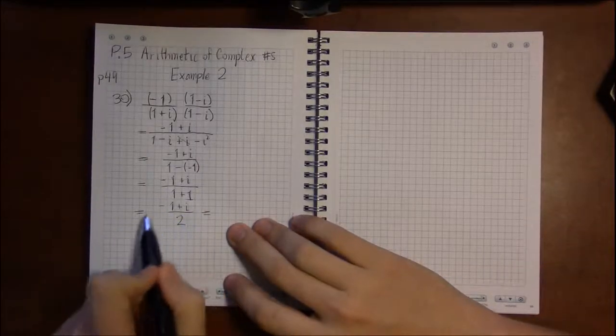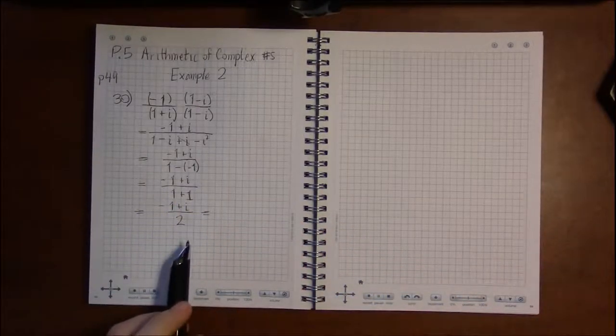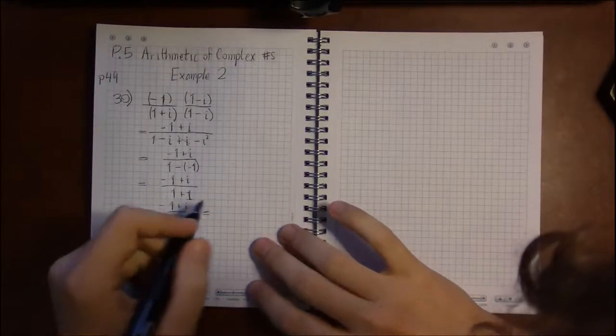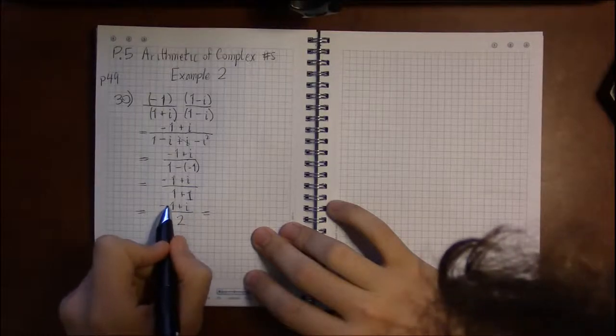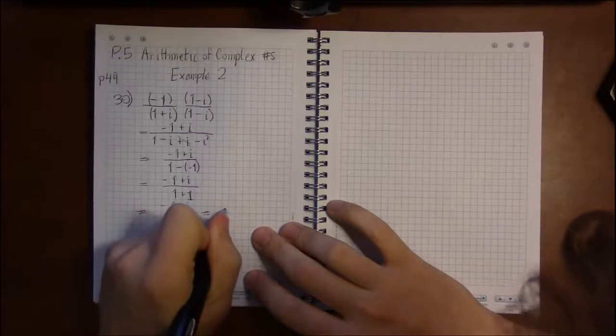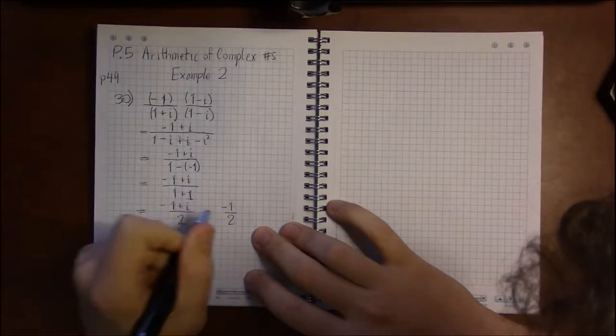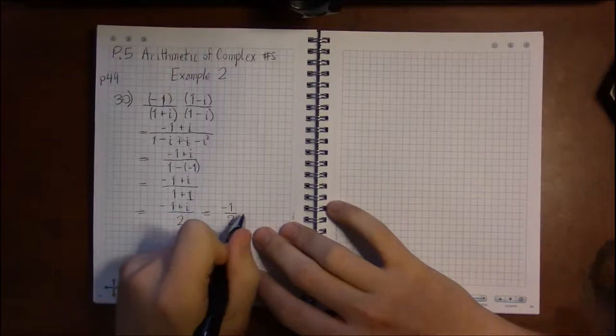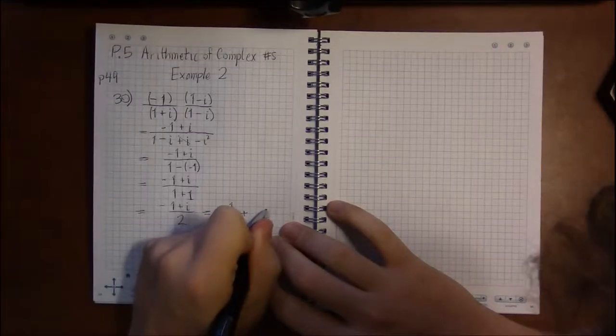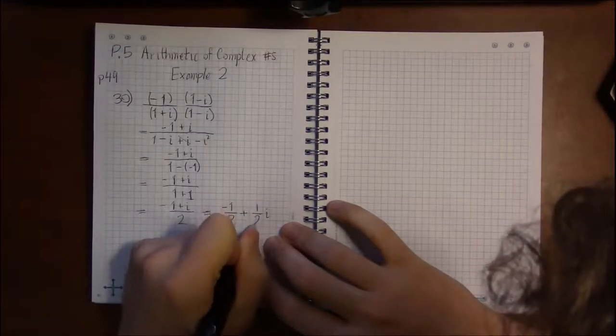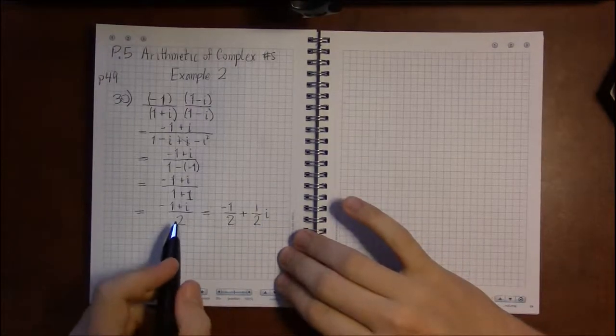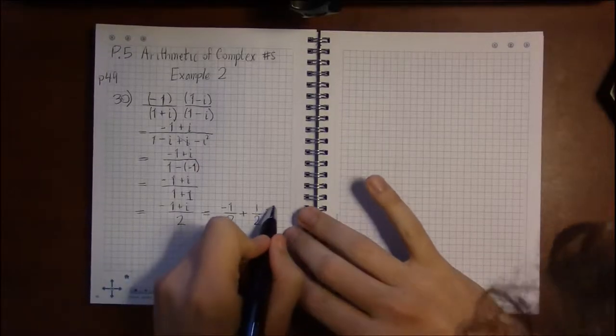There's nothing wrong, you know, leaving your answer in homework or on exams like this. But if you're trying to check your answer in the back of the book, they're going to distribute the over 2 to the minus 1 and to the i, to both terms up top here. So we have minus 1 over 2 plus i over 2. And i over 2 is just i times a half, or i times a half.